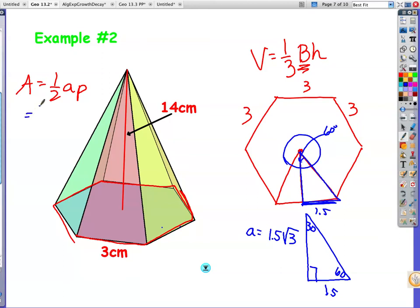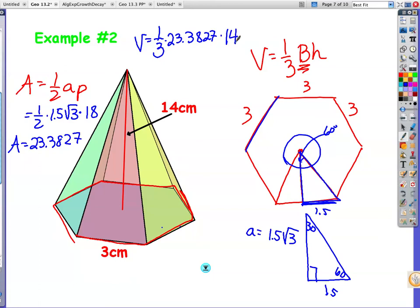So I'm going to do one-half my apothem and I'm just going to leave 1.5 square root 3 because my calculator can do more figuring for me, and the perimeter is 3 times 6 which is 18. I'm getting the area of the base to be 23.3827. Now I'm going to take that number, times 23.3827 times the height which is 14, and I'm getting 109.1 and this would be centimeters cubed.